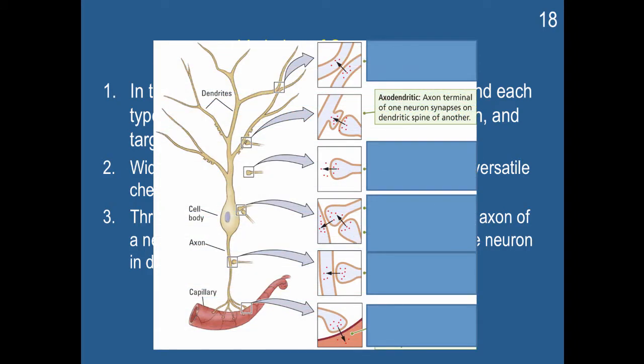So here are some examples of the different types of synapses. This axodendritic, this is the most common one, and this is what we've been talking about so far the most. The axon terminal of one neuron synapses on the dendritic spine of another.